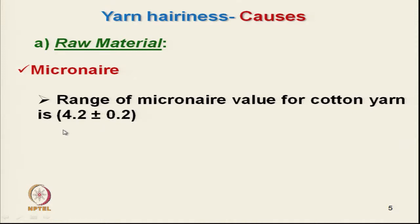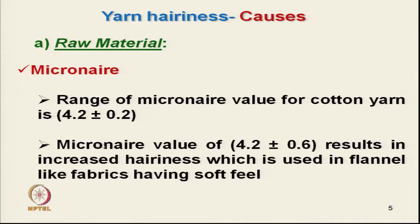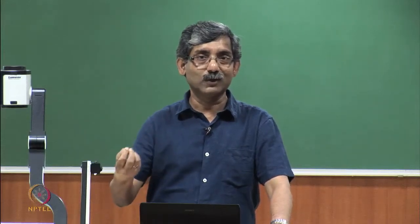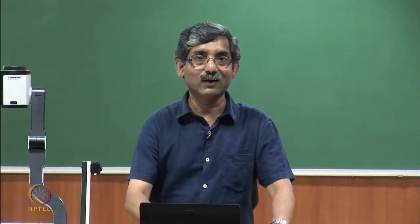For cotton with a micronaire of 4.2, the acceptable range is plus or minus 2. A micronaire value of 4.2 plus or minus 0.6 results in increased hairiness, which is used in flannel-like fabric having a soft feel. If you want fabric with a flannel-like filling, you need cotton with higher variability in micronaire. One can mix two different varieties of cotton with different micronaire values to deliberately create hairiness.